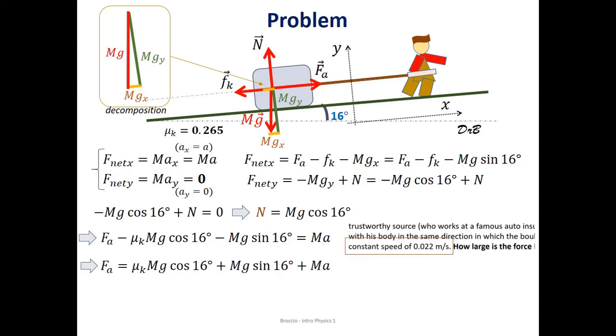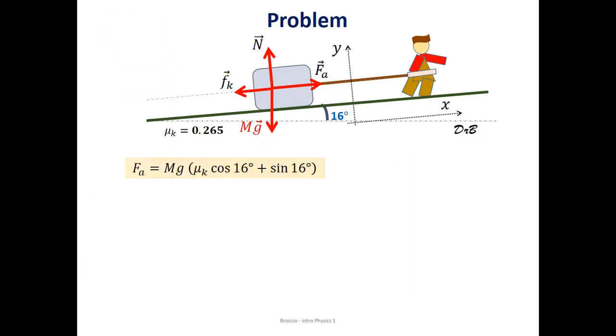Alright, we notice that the problem is telling us that the velocity is constant in magnitude and direction, so the acceleration is zero. Symbolically, this is a dimensionally correct expression because mg is a force and the term in parentheses is just a combination of dimensionless quantities. The units are Newton.